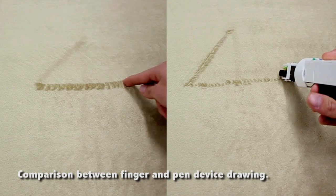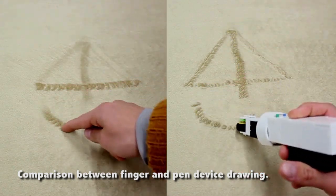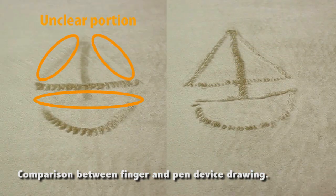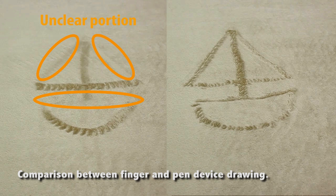A comparison between drawing with one's finger and drawing with the device. Drawing with one's finger is difficult when the direction is aligned with the direction of the fur's growth.